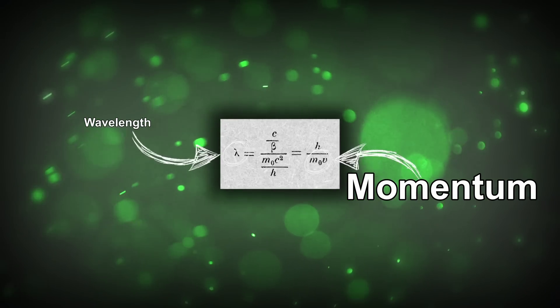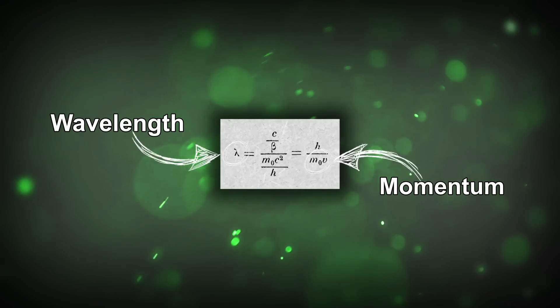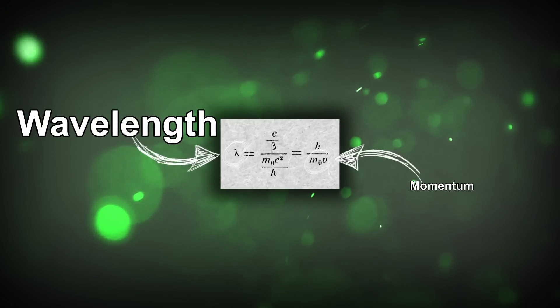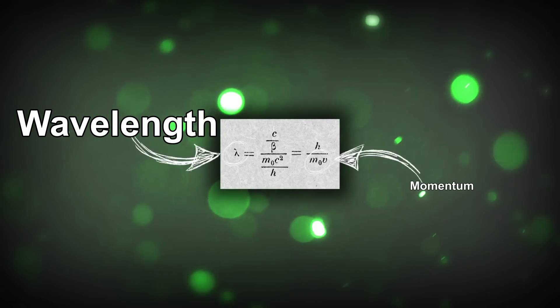So the wavelength of a person is completely negligible. However, an electron is so tiny that its wavelength becomes significant. So not only can it behave as a particle, it can behave as a wave.